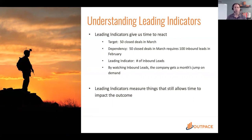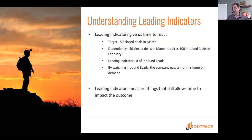When we move to a leading indicator, we pay attention to dependencies. Fifty closed deals in March means we need about 100 inbound leads in February. If we got 100 leads in February, we'll feel confident about hitting 50 closed deals. If we only got 70 leads, we know we'll have a closed deal problem and need to close that gap. If we got 150 leads, March is going to be a healthy month and we may need to address capacity.